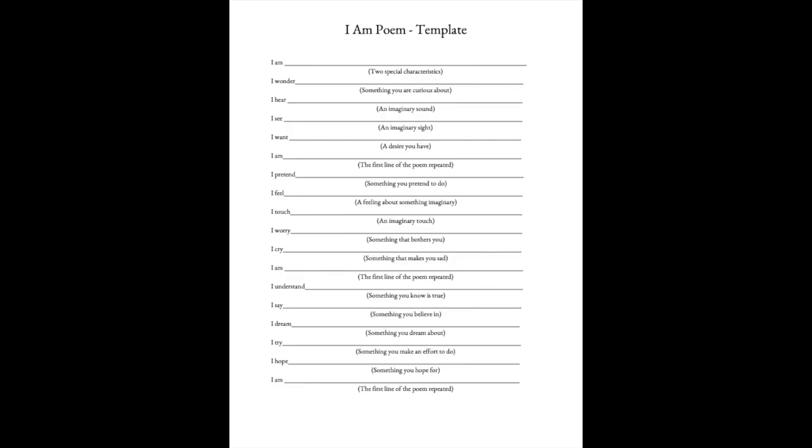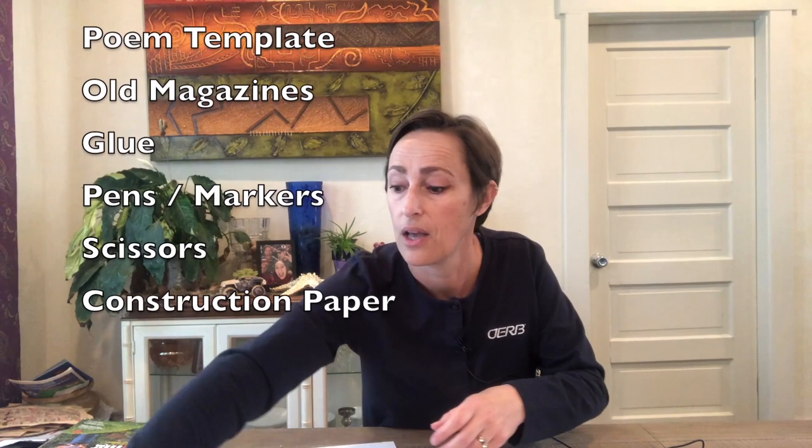The first thing you're going to need is a template. This template has been provided for you as a link, so once you have this printed off, you'll be able to write your own piece of poetry line by line in a very organized fashion with full instructions. You're also going to need an old magazine that you can cut into for images to decorate your poem at the end. You're going to need a glue stick or a carton of glue, pens and markers for decoration, a pair of scissors, and construction paper if you want it.